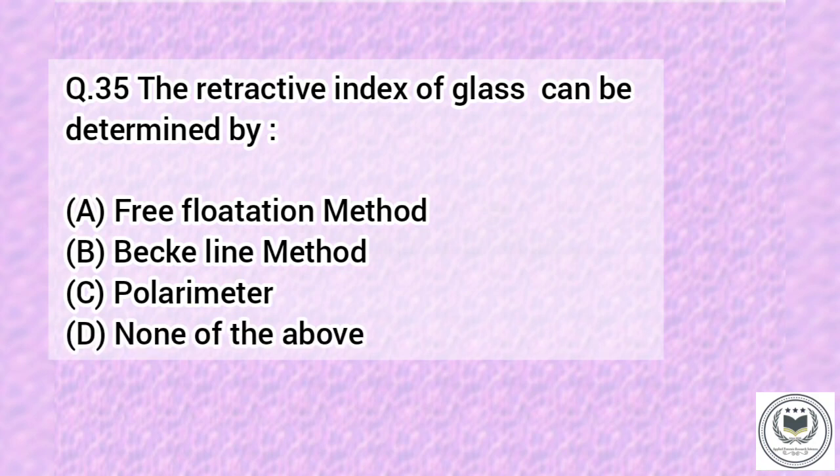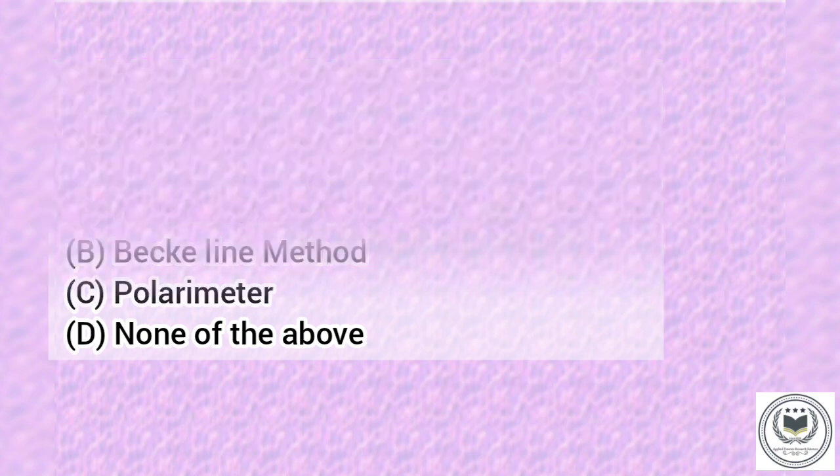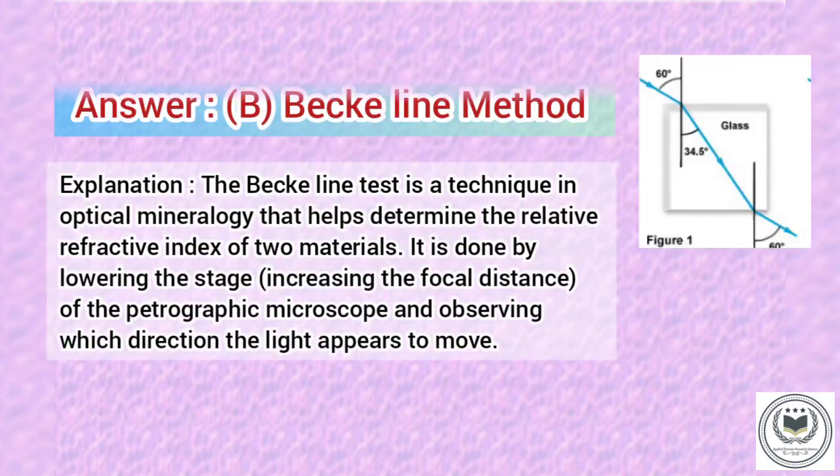Question 35. The refractive index of glass can be determined by: Option A: Free flotation method. Option B: Bekeline method. Option C: Polarimeter. Option D: None of the above. Answer is Option B, Bekeline method.